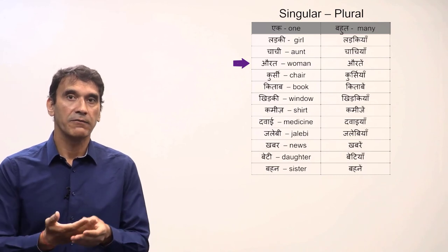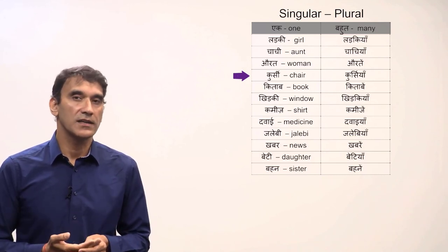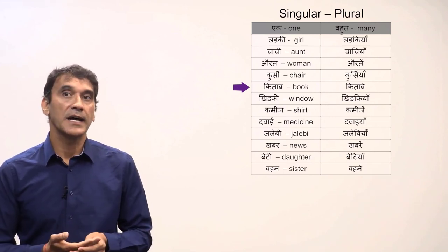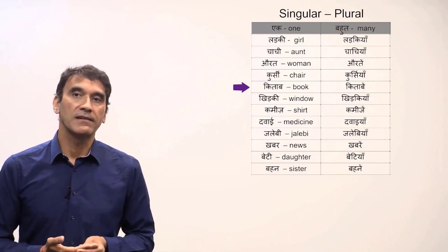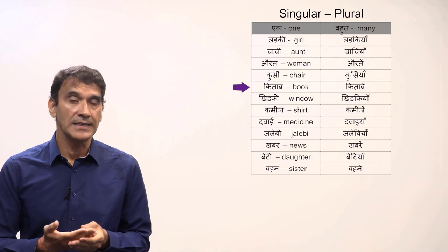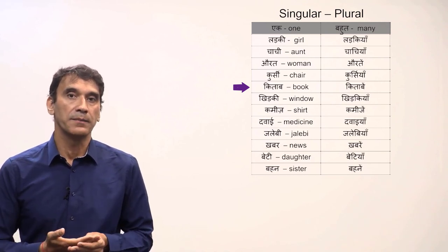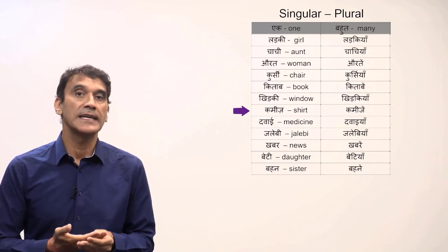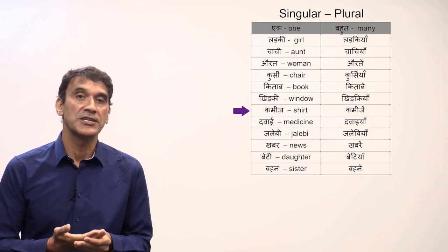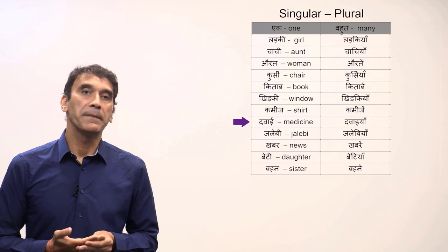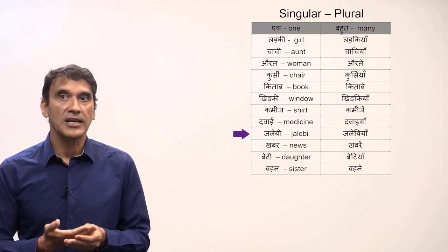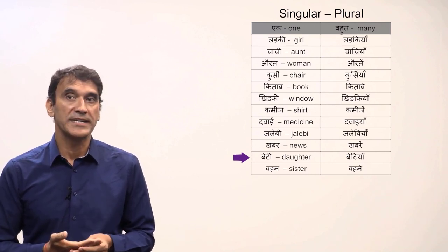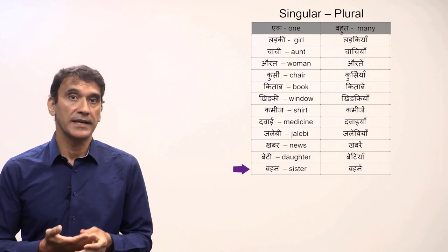More examples: 'kursi' meaning 'chair' ends in 'ee', so the plural is 'kursiyan' meaning chairs. 'Kitaab' meaning 'book' does not end in 'ee', so it gets 'en' — 'kitaaben' meaning books. 'Khidki' meaning 'window' gives 'khidkiyan' meaning windows. 'Kameez' meaning 'shirt' not ending in 'ee' gives 'kameezeyn'. 'Dawai' medicine gives 'dawaiyan'; 'jalebi' gives 'jalebiyan'; 'khabar' news gives 'khabrein'. 'Beti' daughter gives 'betiyan'; 'behen' sister gives 'behnein'.